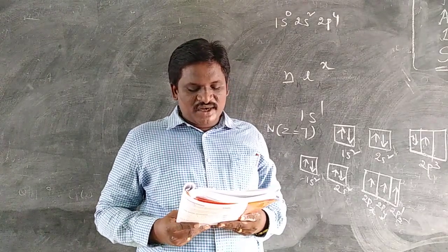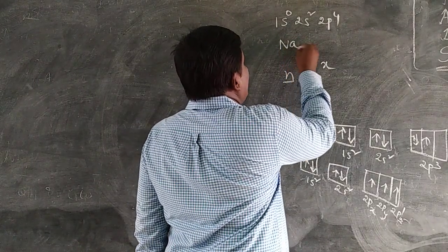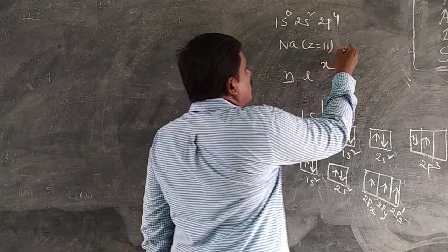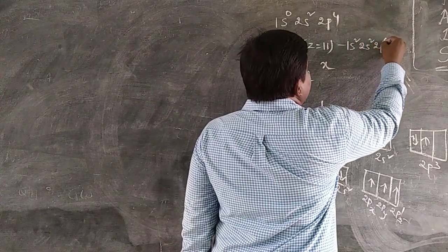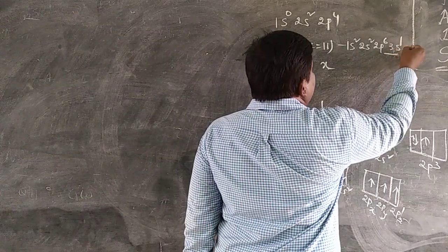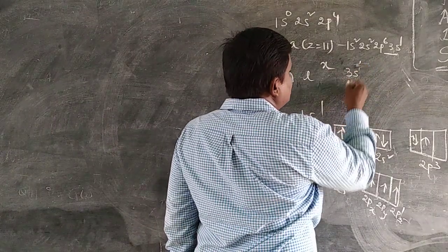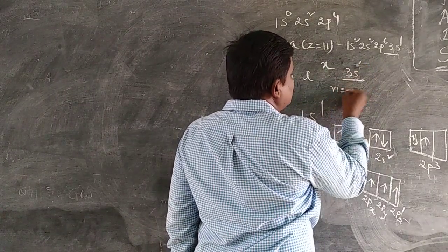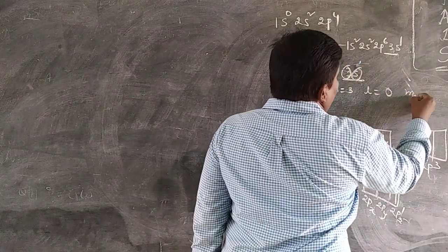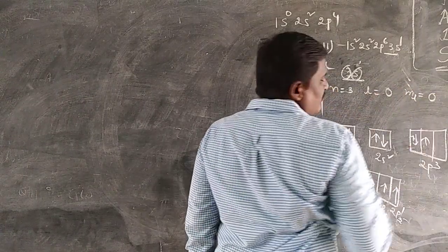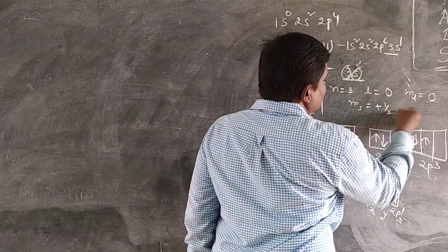Next: write the four quantum numbers for the differentiating electron of sodium. Sodium, Na, has atomic number 11. Electronic configuration: 1S2, 2S2, 2P6, 3S1. The last differentiating electron enters into the 3S1 orbital. For the 3S orbital: N value is 3, S means L value is 0, ML value is automatically 0, and MS value is plus or minus one-half.